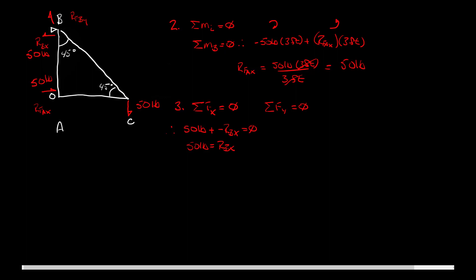Similarly, in the Y direction, the sum of forces gives me: the reactionary force at B in the Y direction minus 50 pounds (the force acting at C) equals zero. Solving that, the reactionary force at B in the Y direction equals 50 pounds. So RBY is up and RAX is to the left. I've now solved for all forces acting externally on this truss.